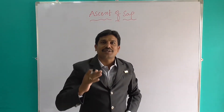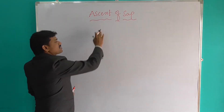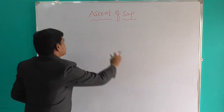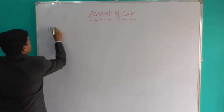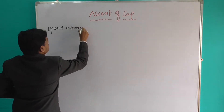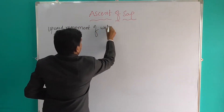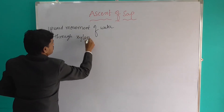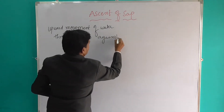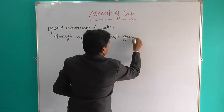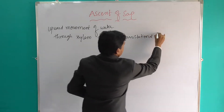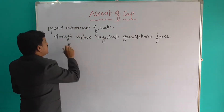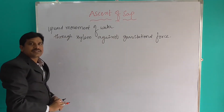Let us discuss ascent of sap. What is meant by ascent of sap? The upward movement of water through xylem against its gravitational force is called ascent of sap.